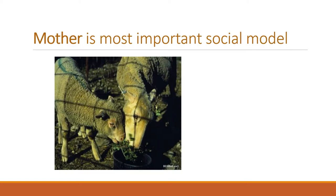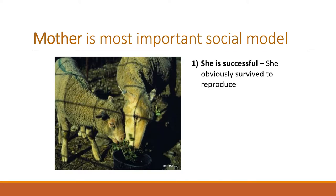Mother is the most important social model. Think about some reasons why she's a really important social model. She's the one that young animals will follow, and eat what she eats and avoid what she avoids. Here's an example of a young lamb just eating right nose to nose with her mother. One reason: she's successful — she's a good model because she's alive.